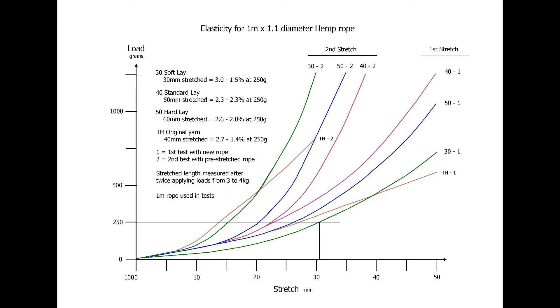What is odd is that you would think the graph aligning the 30, 40, and 50 degree lay angles would be in order and not have the 50 in the center. Stretch percentage for the standard 40 degree lay is the same for both stretch tests. Why? Both graphs show the hemp is more elastic than other materials tested.